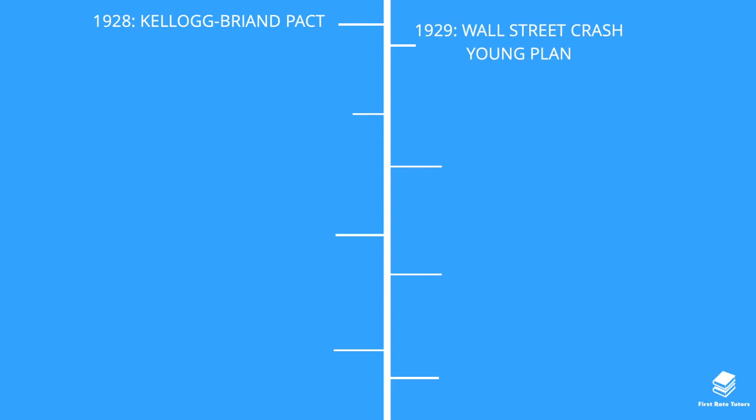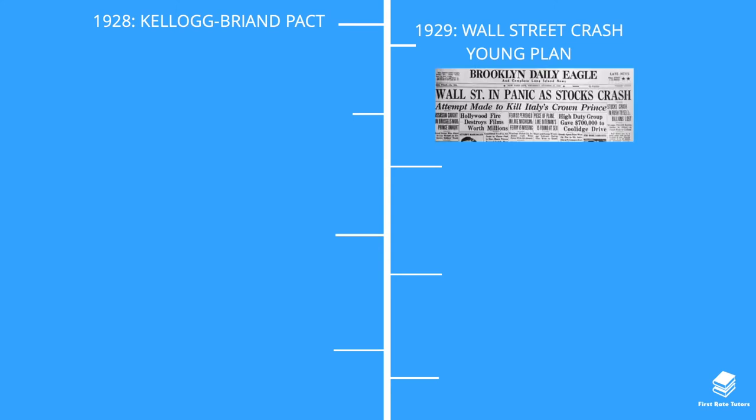In 1929 there were two major events. The Young Plan was an agreement between Germany and the US to reduce reparations to 37 billion marks under the Treaty of Versailles. However, this all went out the window as a result of the Wall Street economic crash in the US, which had a global negative impact. All the money the US had promised Germany it could no longer pay, and Germany also went into depression.